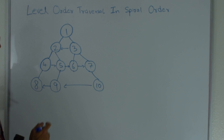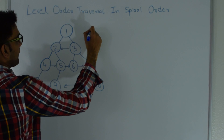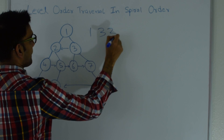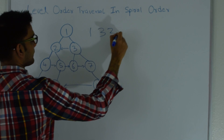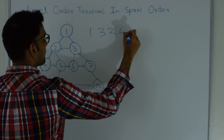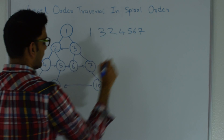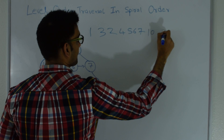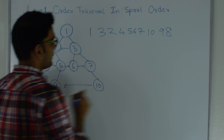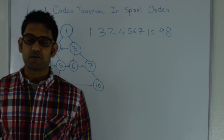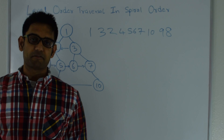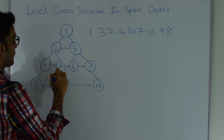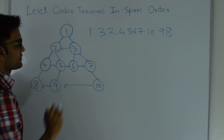For this example, I should print 1, then 3 and 2, then 4, 5, 6, 7, and then 10, 9, and 8. Notice how this is different from regular level order traversal where we usually print 1, 2, 3, 4, 5, 6, 7, 8, 9, and 10.